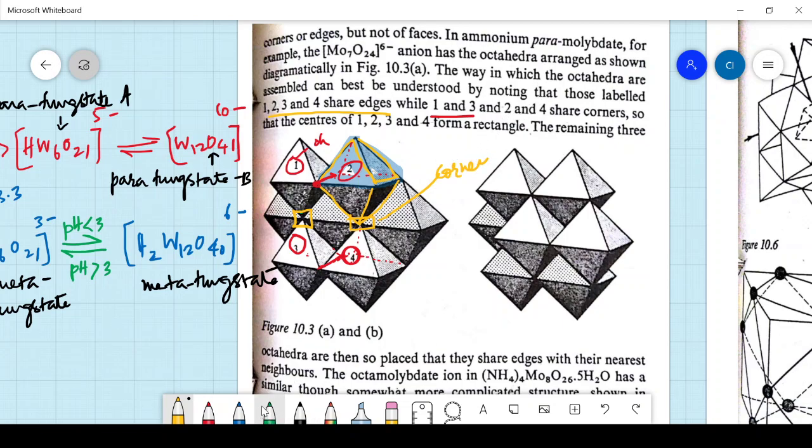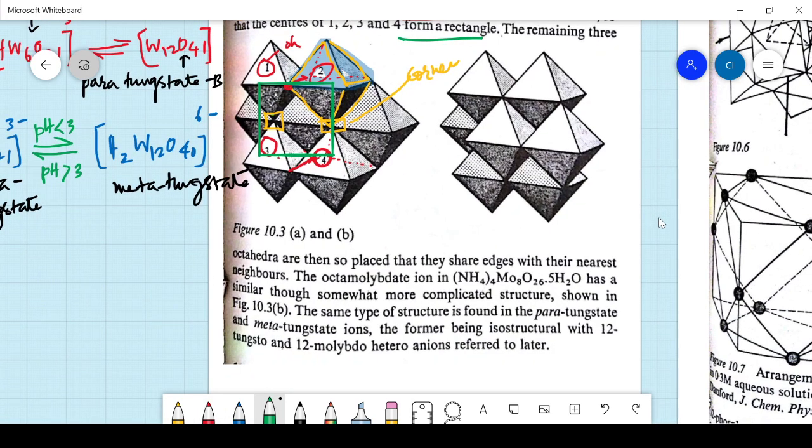So you need to write this about the edges and the corners. And what is more important thing is here. This 1, 2, 3 and 4 they share a rectangle. This is what is being said there. So the remaining 3 octahedra are so placed that they share edges with their nearest neighbors. Now a good example is ammonium molybdate oxide.